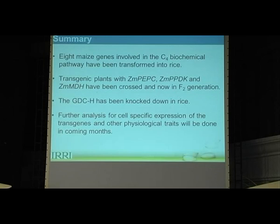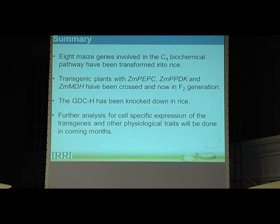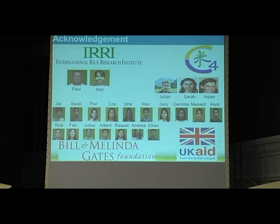In summary, we have transformed eight maize genes involved in the C4 biochemical pathway and been able to express them. Transgenic plants with PEPC, PPDK, and MDH have been crossed and we are now in F2 generation. We were also able to knock down the glycine decarboxylase S subunit in rice. Future work includes immunolocalization for cell-specific expression to verify if genes behave as in a C4 plant, and further physiological analysis to assess gene function. I want to thank all team members involved, and also ERI, Gates Foundation, and UK for funding the project.